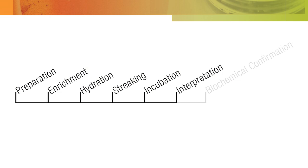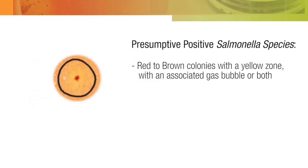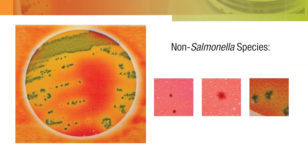The next step in testing is interpretation for presumptive positive salmonella colonies. Now look at the isolated colonies for salmonella species. Presumptive positive salmonella species are red to brown colonies with a yellow zone with an associated gas bubble or both. An associated gas bubble is defined as being located within one colony diameter distance from the colony. All other colony colors and types are non-salmonella species.